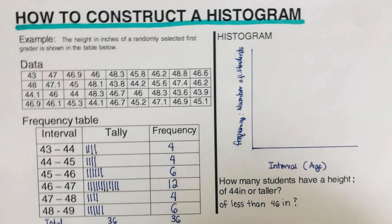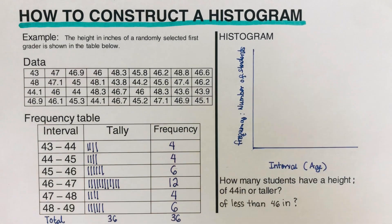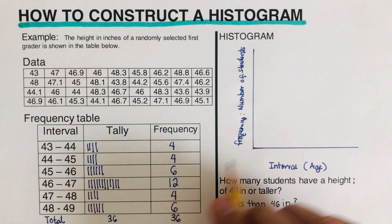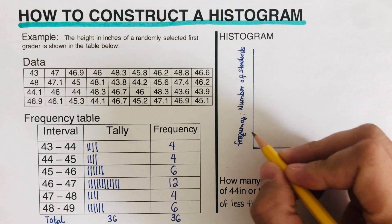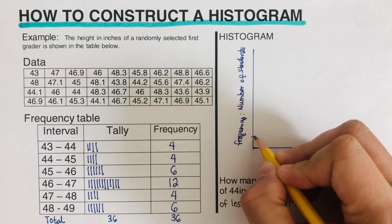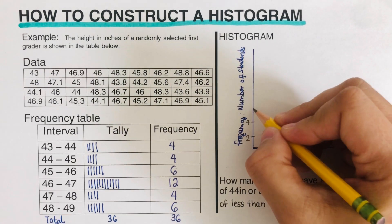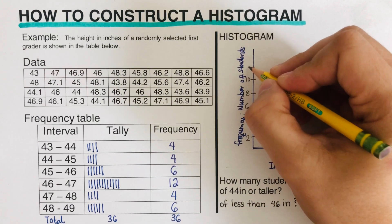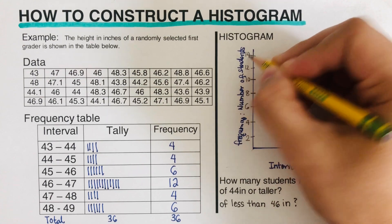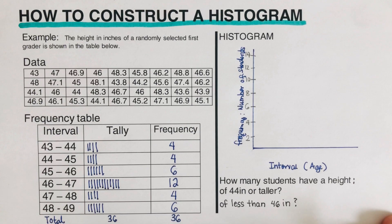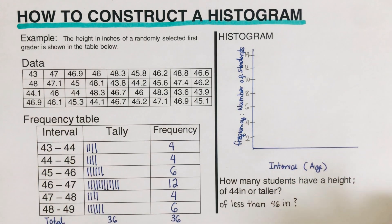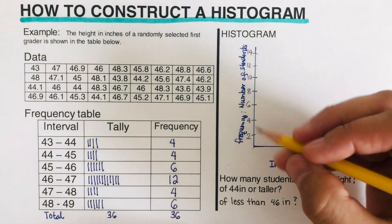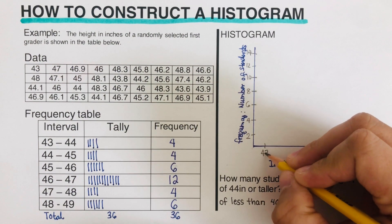Now we divide the axes into parts. The highest frequency is 12, so the vertical axis must reach at least 12. I'll mark it in increments of 2: 2, 4, 6, 8, 10, 12, 14. For the horizontal axis, the intervals start at 43, so I'll mark 43, 44, 45, 46, 47, 48, 49.